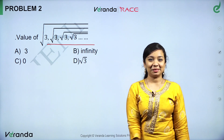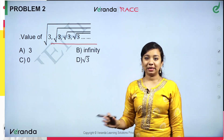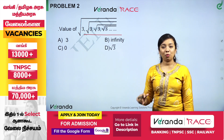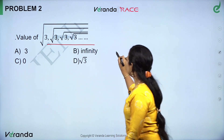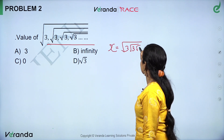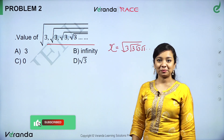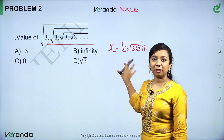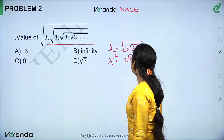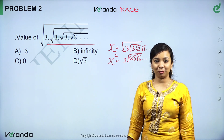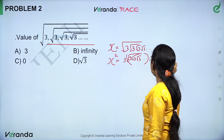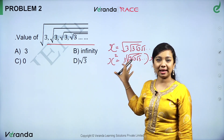Next sum — this one we see in a lot of exams: TNPSC and other government exams. It is a famous sum. The traditional method: root of 3, root of 3, root of 3... root of 3, infinity times. We assume this equals x.